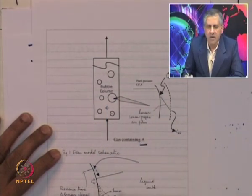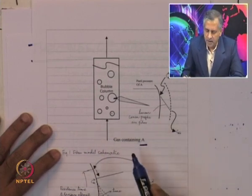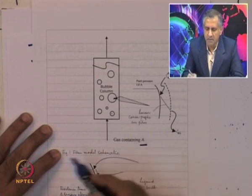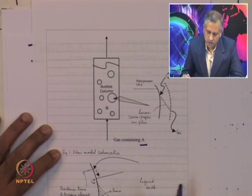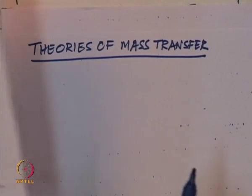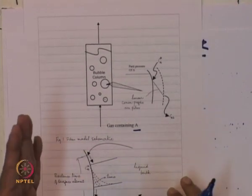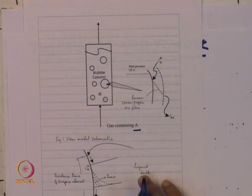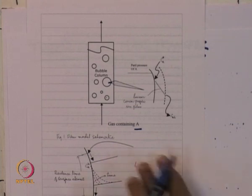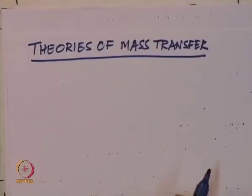The gas contains a solute A which is soluble in the liquid, and there is no reaction for now — A dissolves and diffuses into the liquid. From mass transfer knowledge, there is a gas-phase resistance and a liquid-phase resistance. To keep matters simple, we will assume no gas-phase resistance in the initial discussion and look at the consequences of including it towards the end of these lectures. With those assumptions, we are ready to consider both types of visualization that have appeared in the literature.